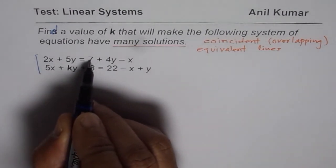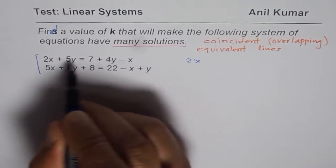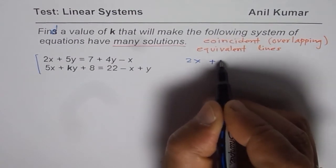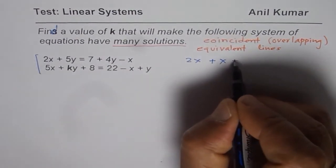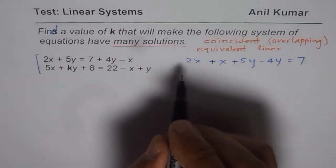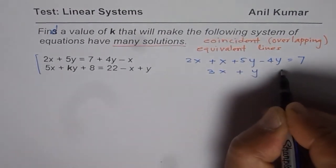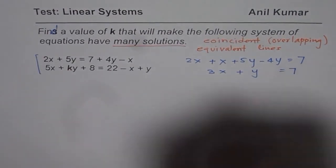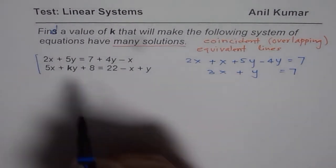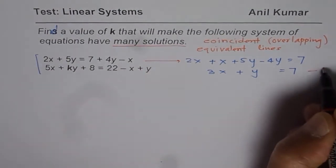2x, and we will keep the constants on the right side. So we could write this as 2x, bringing plus x to this side, so plus x. We have 5y plus 5y minus 4y equals 7. And let us combine these terms. We get 3x plus y equals 7. Okay. Now let us look into the second equation. So this is how we have simplified this and we get equation 1.